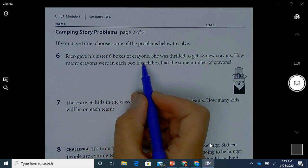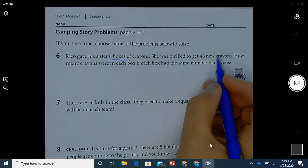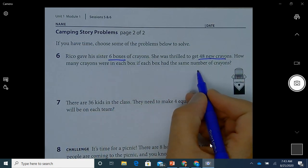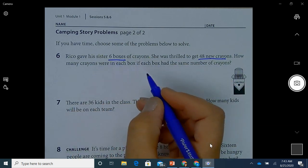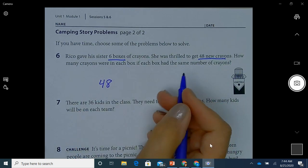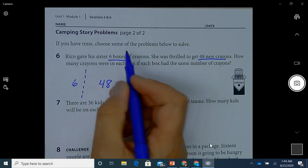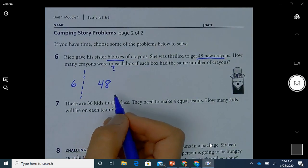So Rico gave his sister six boxes of crayons. She was thrilled to get 48 new crayons. How many crayons were in each box if each box had the same number of crayons? So what I know is that there are 48 altogether, and I know that there are six boxes here. So I'm going to do one, two, three, four, five, six, and what I'm looking for is this number here. What am I going to fill out there, okay? I want you to think about that.